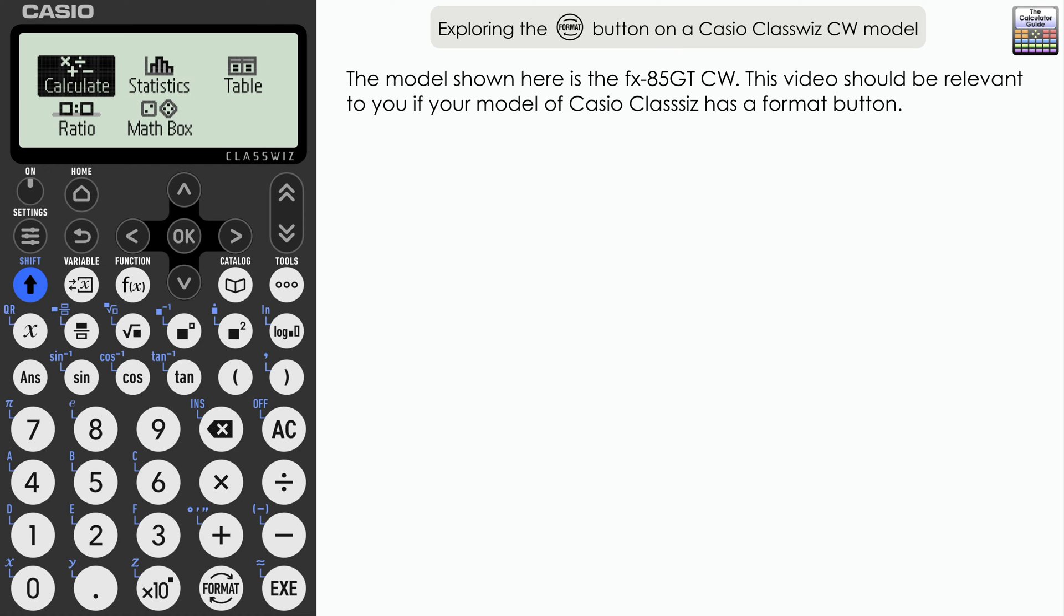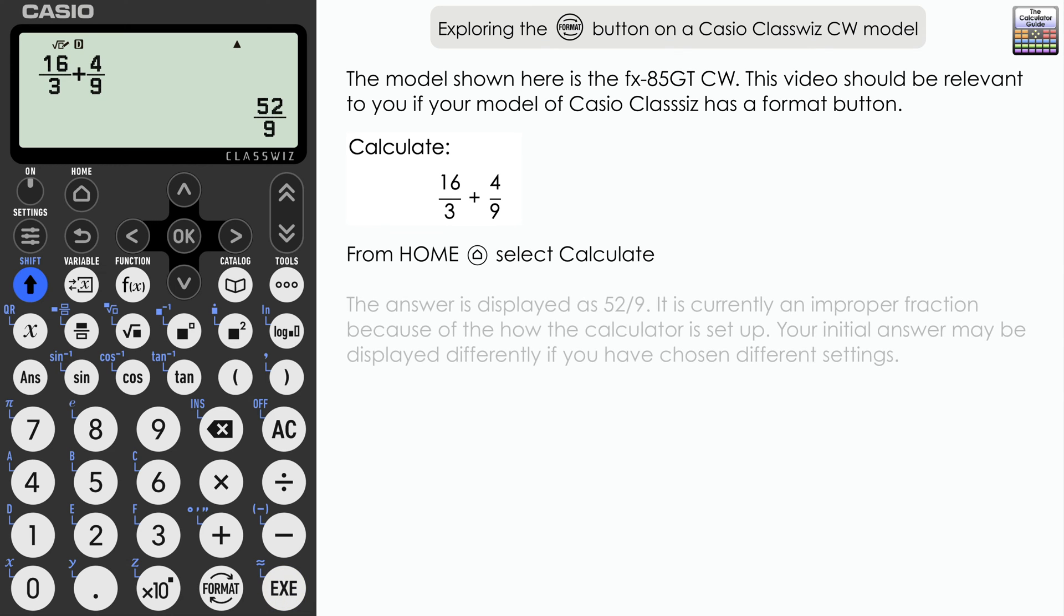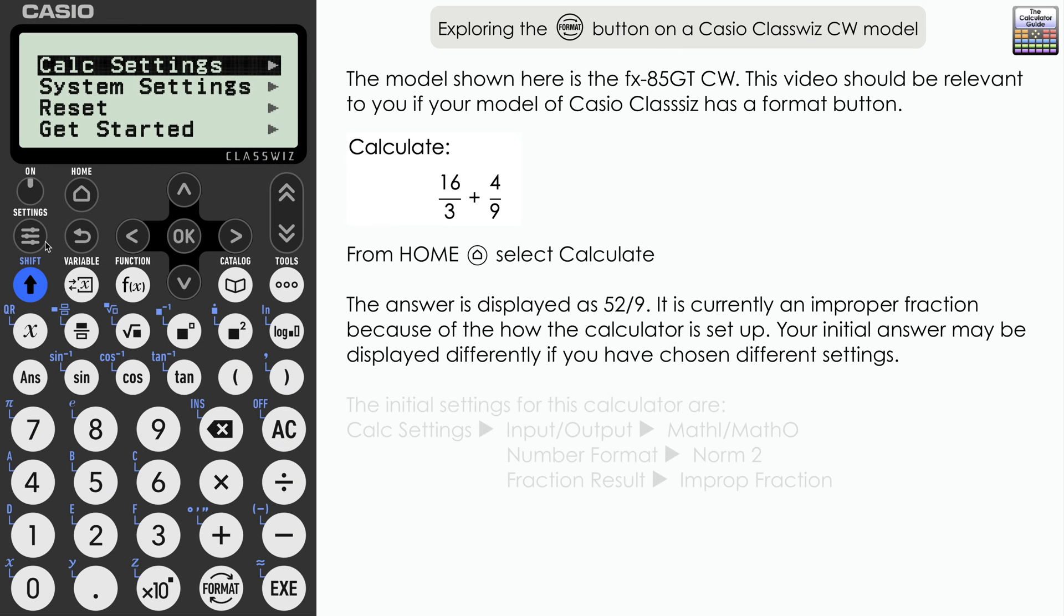We are going to start with a fraction example. From the home menu select calculate and it's 16 thirds plus four ninths and press execute. And here's the answer 52 over 9. The way that the initial answer is presented depends upon the settings of your calculator. And we can explore the different settings of the calculator in another video. But I'm just showing mine here.